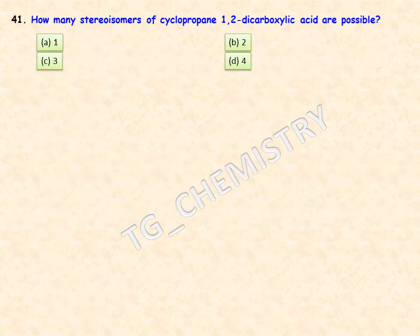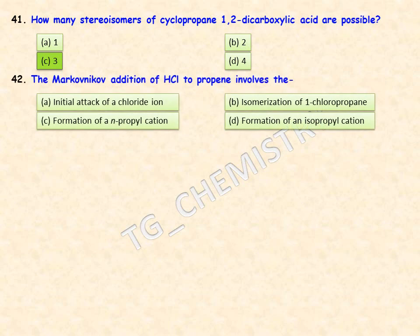How many stereoisomers of cyclopropane-1,2-dicarboxylic acid are possible? Options are one, two, three, and four. The correct answer is option C — three stereoisomers are possible.